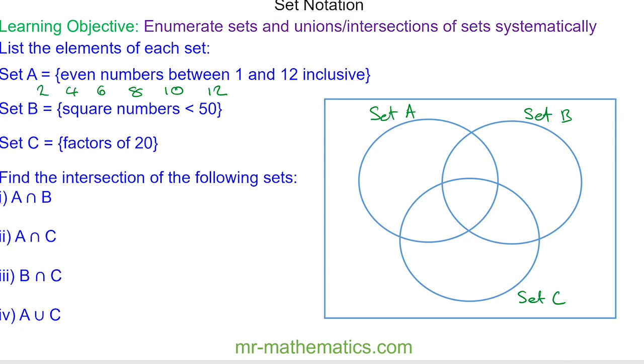The square numbers less than 50 are 1, 4, 9, 16, 25, 36, and 49.